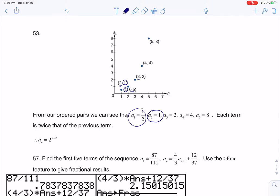So then we can see a sub 3 is equal to 2, a sub 4 is equal to 4, a sub 5 is equal to 8.